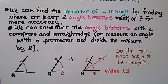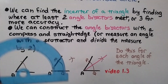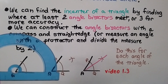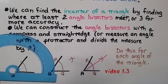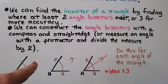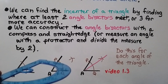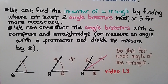We can find the in-center of a triangle by finding where at least two angle bisectors meet, or three for more accuracy. We can construct the angle bisectors with a compass and a straight edge, or measure an angle with a protractor and divide the measure by two. If we use a protractor, we can measure the angle — if it's 60 degrees, we mark a point at 30 degrees, since 60 divided by 2 is 30, and then use our straight edge to draw the angle bisector.